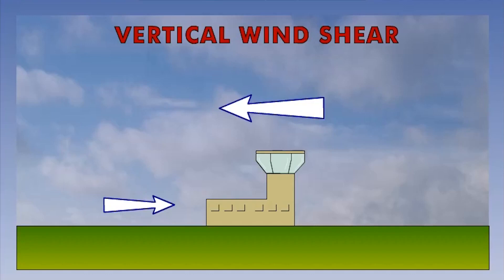Vertical windshear is the change in the wind speed and or direction with height. The diagram shows what this might look like. The bottom of the tower is exposed to a very different speed and direction than the top. Vertical windshear is usually measured in knots per 100 feet.